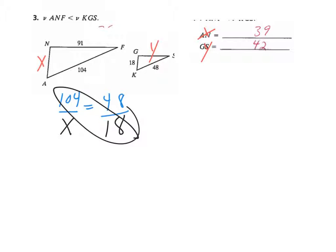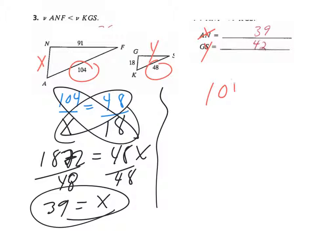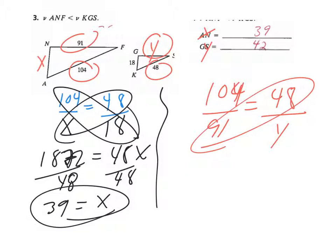Cross product fun, 104 times 18 is 1872 equals 48X. Divide off that 48 and X is 39. And the other one, again we know the 104 is like the 48, 104 is like the 48, and the 91 is like the Y. The 91 is like the Y, and the order does matter here folks, it really does. So 91 times 48 is 4368, and then 104 times Y is 104Y. Divide off that 104 and Y is 42.